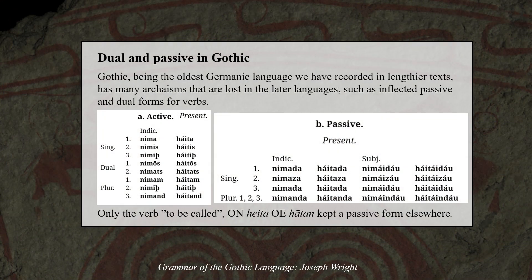Gothic is the oldest Germanic language we have recorded in lengthier texts, already around 300 AD, and it has many archaisms that are lost in later languages, such as an inflected passive and dual forms for verbs. Only remnants of these verb forms remain in later Germanic languages, like for example the verb 'to be called' or 'to call upon' in Old Norse and Old English. Otherwise these verb forms are completely lost, and the forms with S in North Germanic are innovations unrelated to these ancient endings.